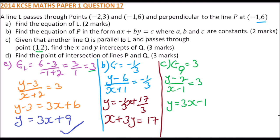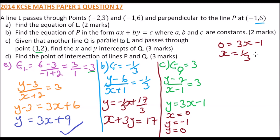For the x-intercept, set x equal to 0, so y equals minus 1. For the y-intercept, set y equal to 0, so 0 equals 3x minus 1, meaning x equals 1 over 3. So the x-intercept is 1 over 3 and the y-intercept is minus 1.